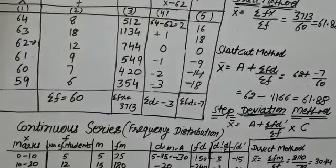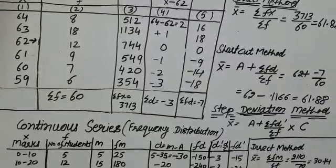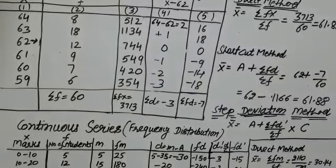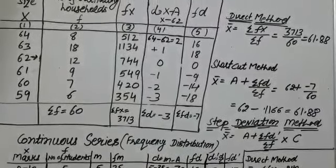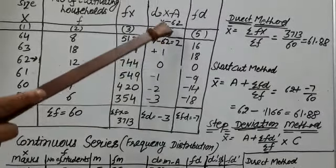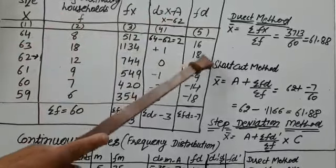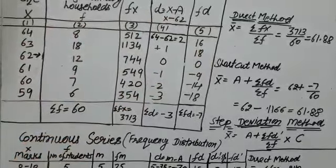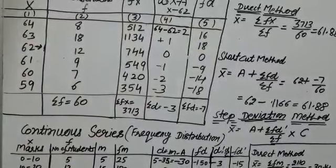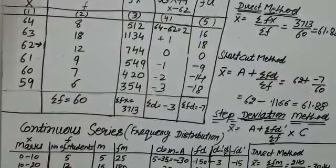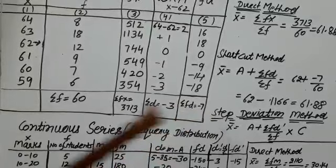Then we will calculate fd, that is d multiplied by frequency. So we will get 16, 18, 0, minus 9, minus 14, minus 18, and sigma fd is equal to minus 7.